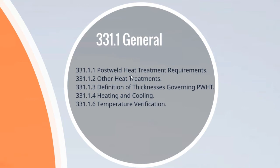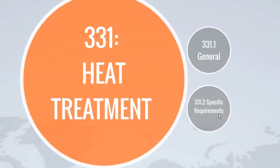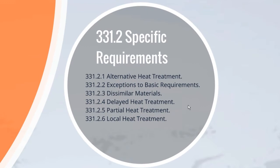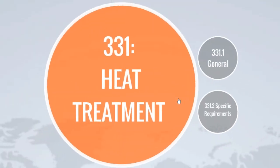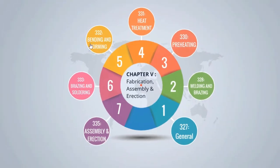Second subpara 331.2 lists specific requirements in six subsections: 331.2.1 Alternative Heat Treatment, 331.2.2 Exceptions to Basic Requirements, 331.2.3 Dissimilar Materials, 331.2.4 Delayed Heat Treatment, 331.2.5 Partial Heat Treatment, and 331.2.6 Local Heat Treatment. Next is para 332, titled Bending and Forming.